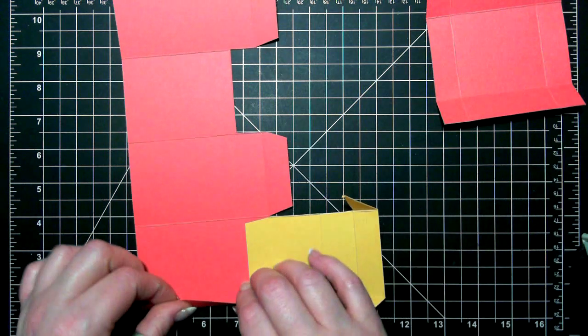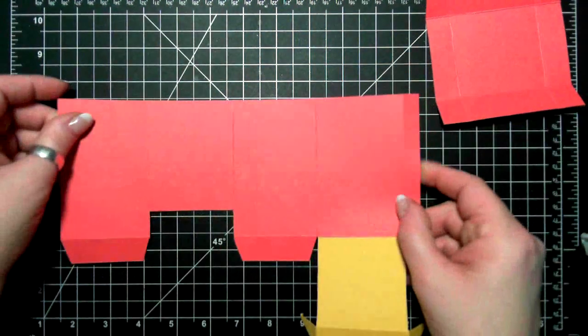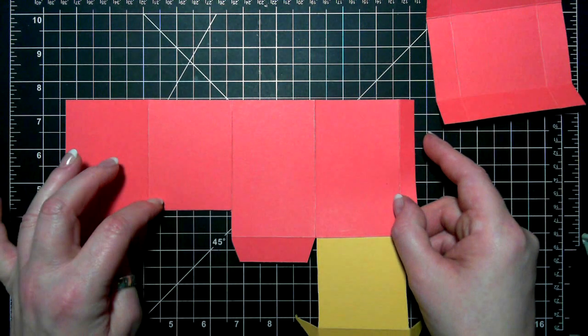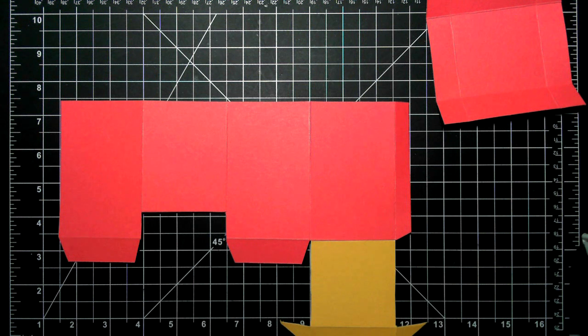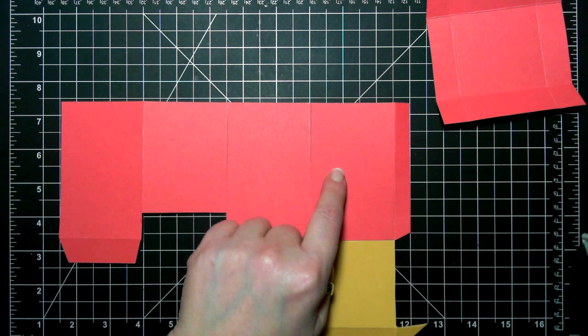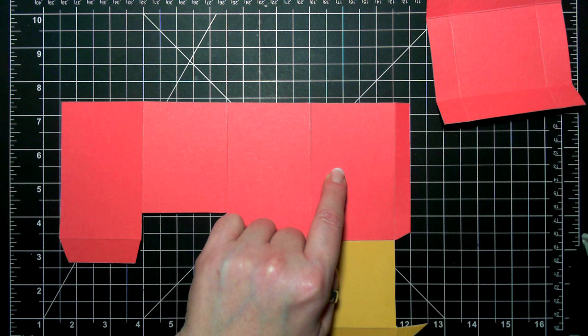I find it easier to line up with the crease like that. Okay. So if you wanted to put your designer series paper on, you can now.